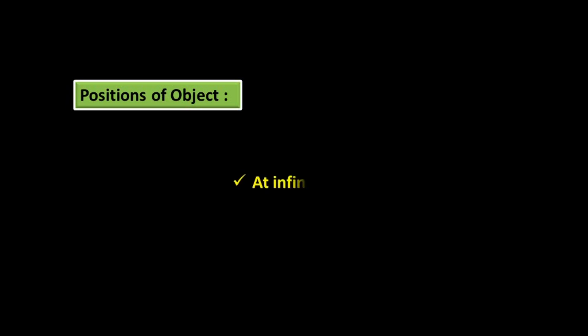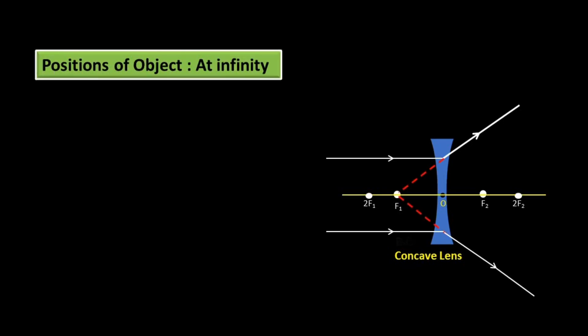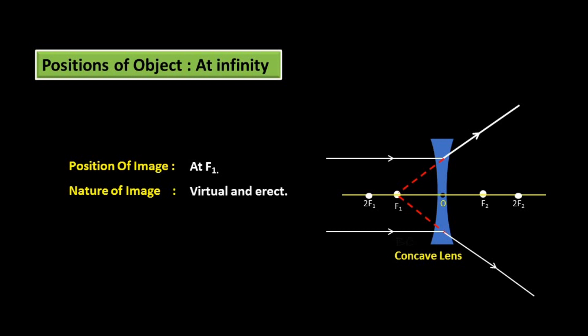Image formed by Concave Lens — Positions of Object for the Formation of Image: Object at Infinity and Object at Finite Distance. For Object at Infinity: This is the Concave Lens with the Principal Axis. The rays coming from the object at infinity are parallel to the Principal Axis. After refraction, they go away from each other — Divergence of Light Rays — but appear to be coming from Focus F1. Position of Image: At F1. Nature of Image: Virtual and Erect. Size of Image: Highly diminished.